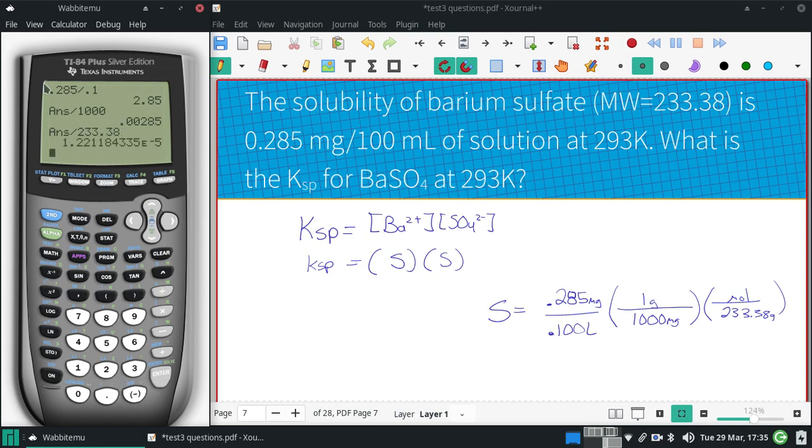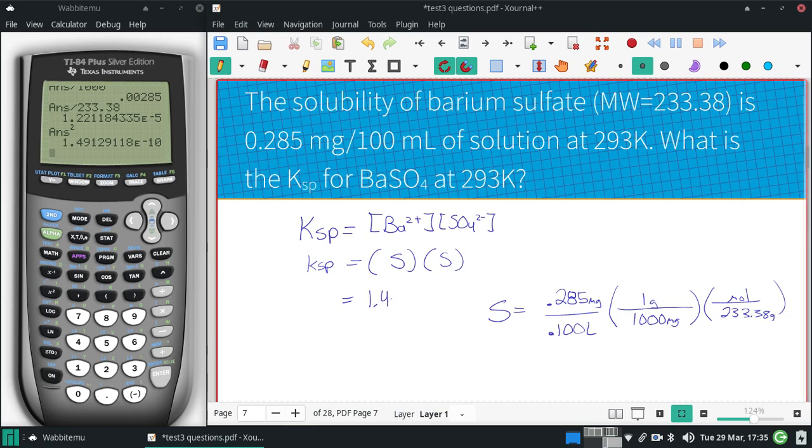Giving us a molar solubility of 1.2 times 10 to the negative 5th. And then to get my Ksp, I'm just going to square that, S times S. So I get a Ksp of 1.4, and I can use three significant figures, times 10 to the negative 10th.